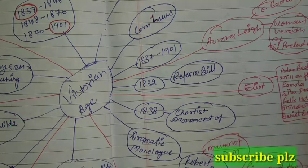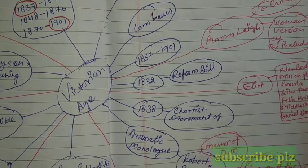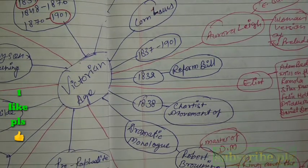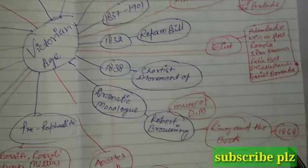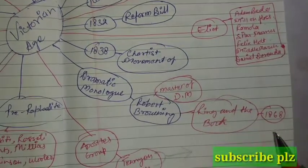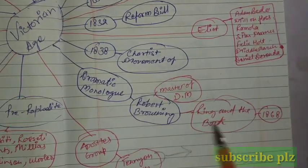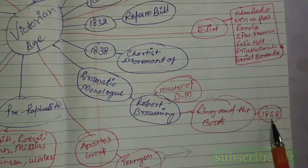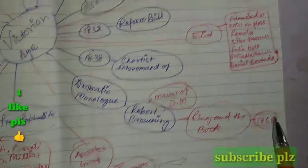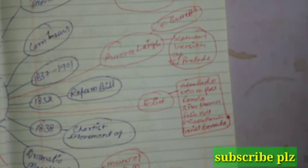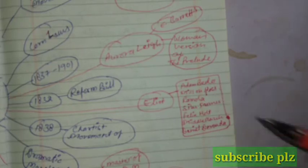Dramatic monologue is an important literary thing. Robert Browning was the master of dramatic monologue. He also wrote a book named The Ring and the Book, and it got published in 1868.